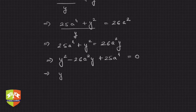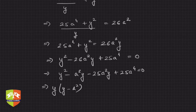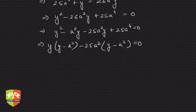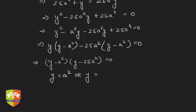I'll split the middle term and write: y squared minus a squared y minus 25a squared y plus 25a to the power 4 equals 0. Taking y common from the first two terms gives y(y minus a squared), and taking minus 25a squared common gives minus 25a squared times (y minus a squared) equals 0. So (y minus a squared)(y minus 25a squared) equals 0, meaning y equals a squared or y equals 25a squared, which can be written as 5a whole squared.